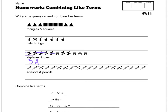I'll just cross them out. Plus one C for this car. I can actually rewrite that as just C, because there's only one C — one times C is C. Then I'm going to cross out these guys because I'm going to write 2A for two more airplanes, and then add 3C for cars.